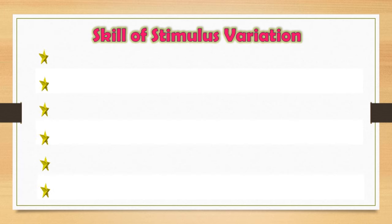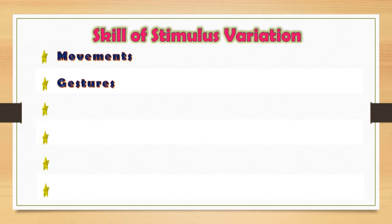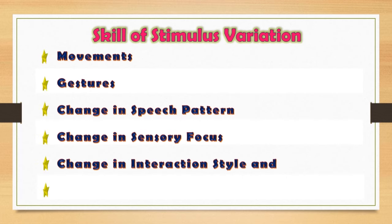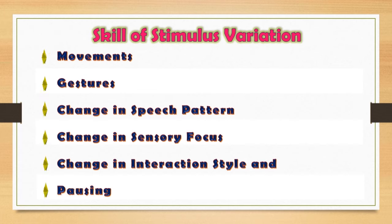The components of the skill are as follows: movement, gestures, change in speech pattern, change in sensory focus, change in interaction styles, and pausing. Now let us discuss the components one by one.